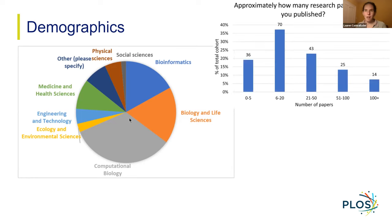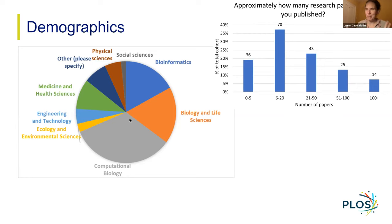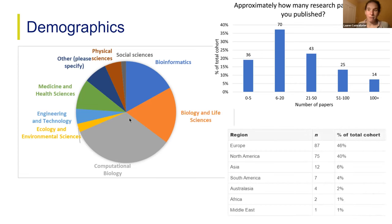Some demographics to start with: this was intentionally aimed at computational biology researchers, who make up about a third of our respondents. We also had good representation from bioinformatics and biology life sciences fields, with about a third of other respondents from various fields. This is important to bear in mind when thinking about conclusions — they're quite specific to this field and we shouldn't extrapolate them to other fields. The survey was more weighted towards early to mid-career researchers, and results are heavily biased towards North America and Europe geographically.